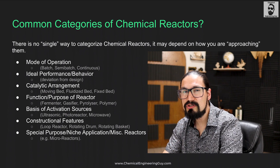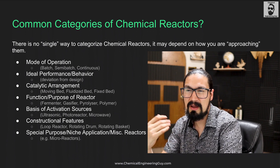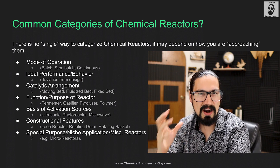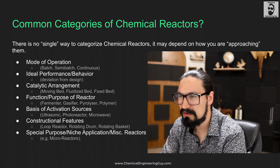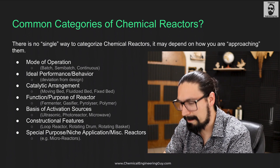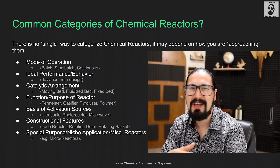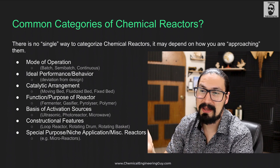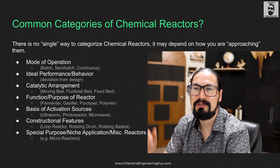Another category is basis of the activation source — for example, ultrasonic operation, photoreactors, or microwave reactors. We may also categorize by constructional features, which is very common in EPC work where people are more interested in how the reactor will be built and installed rather than its actual operation — examples include loop reactors, rotating drum reactors, and rotating basket reactors. Finally, there are special purpose or niche application reactors, such as micro reactors, that don't fit neatly into other categories.